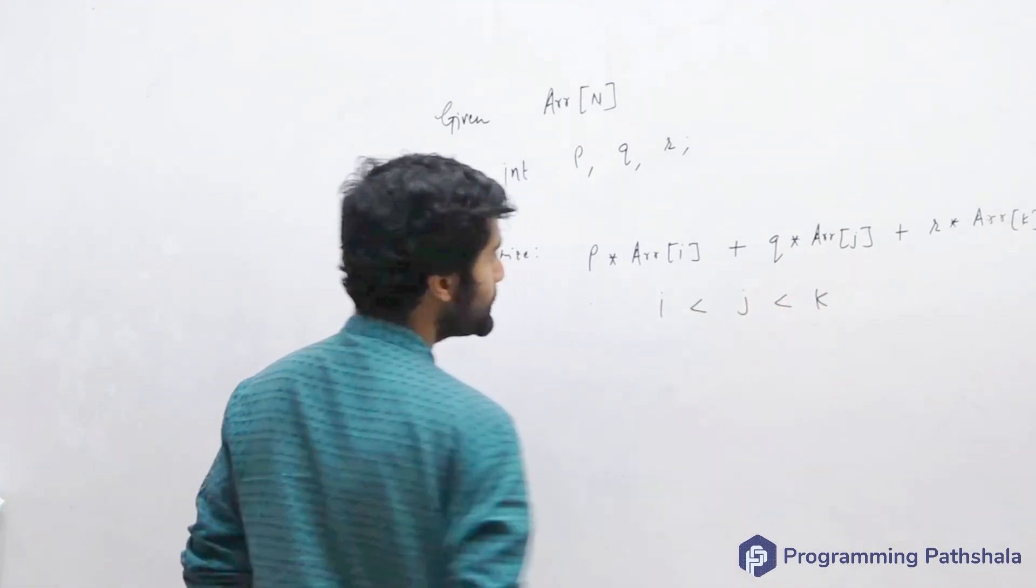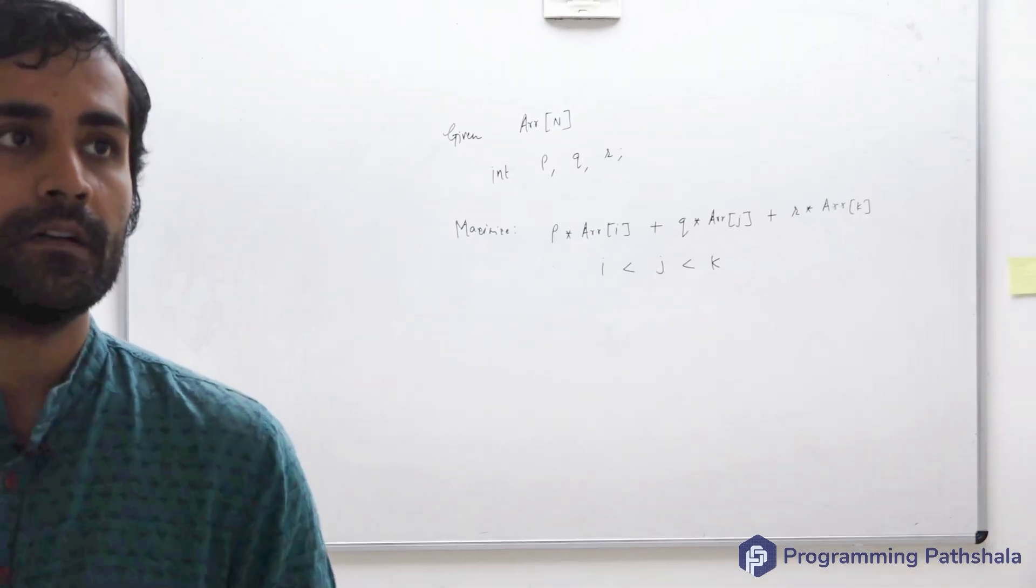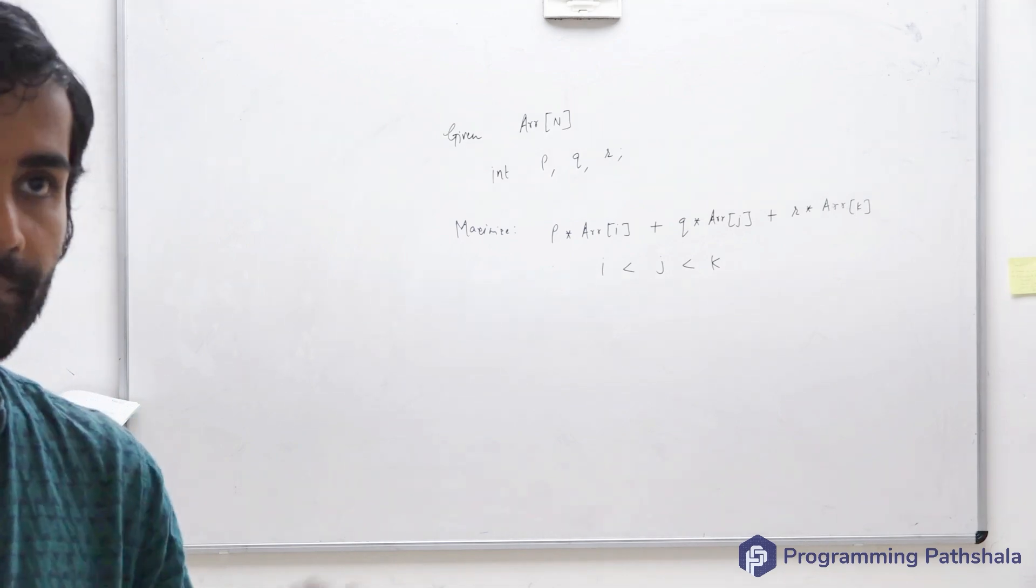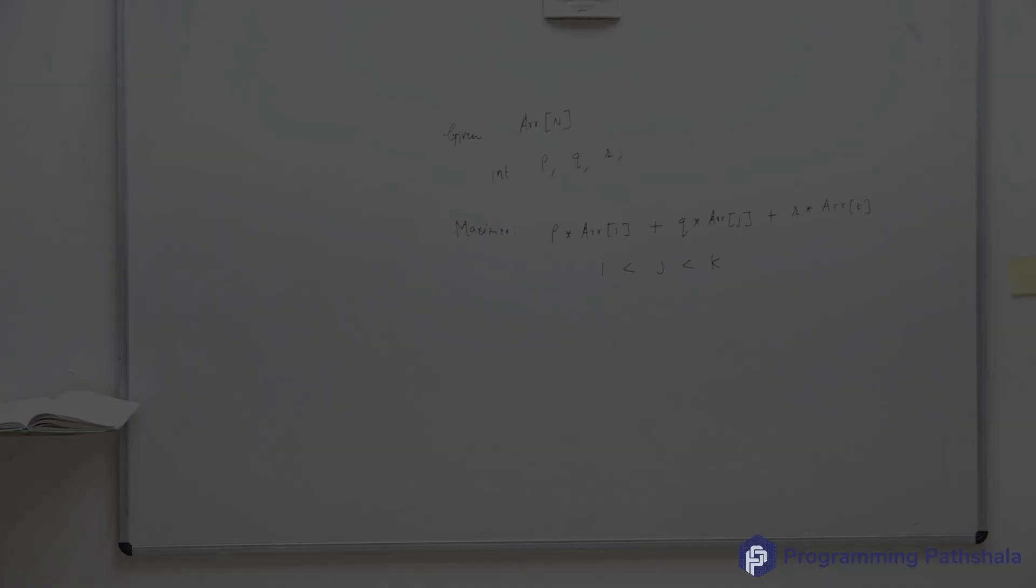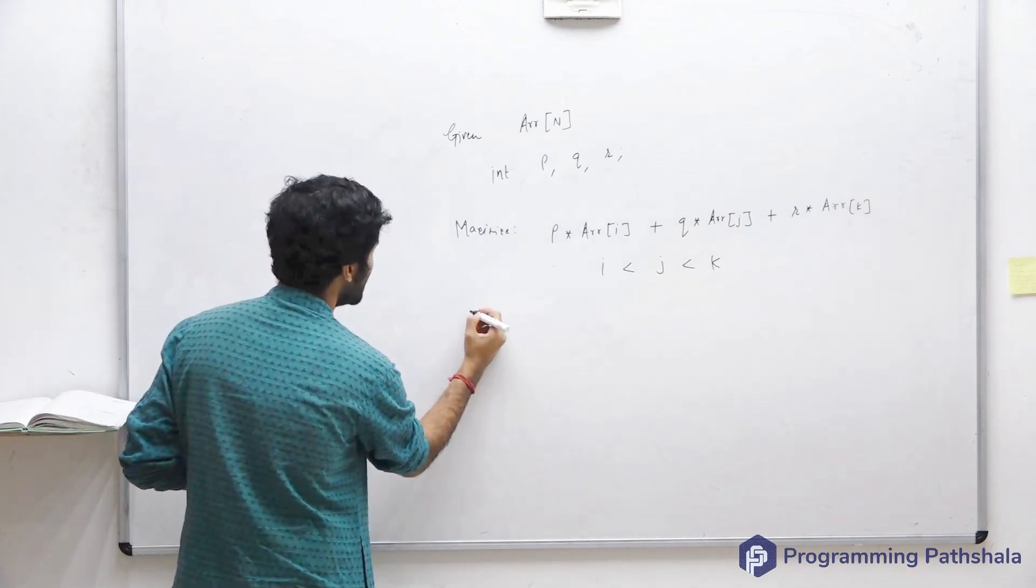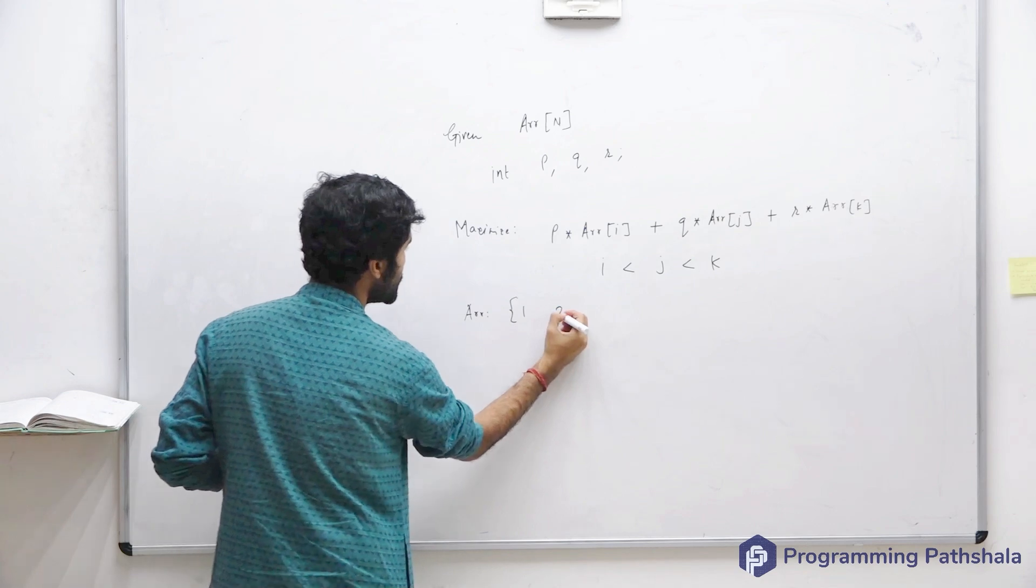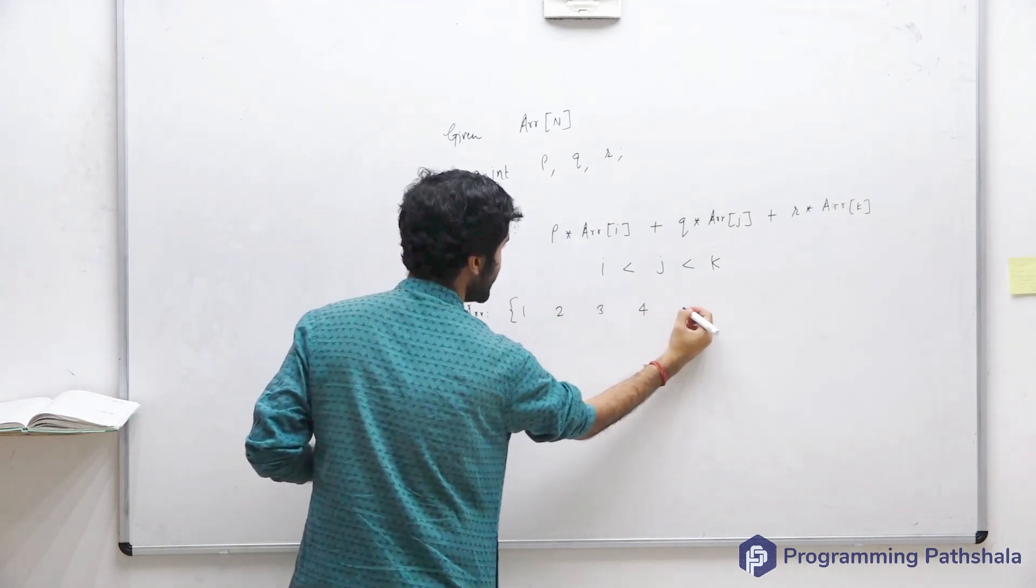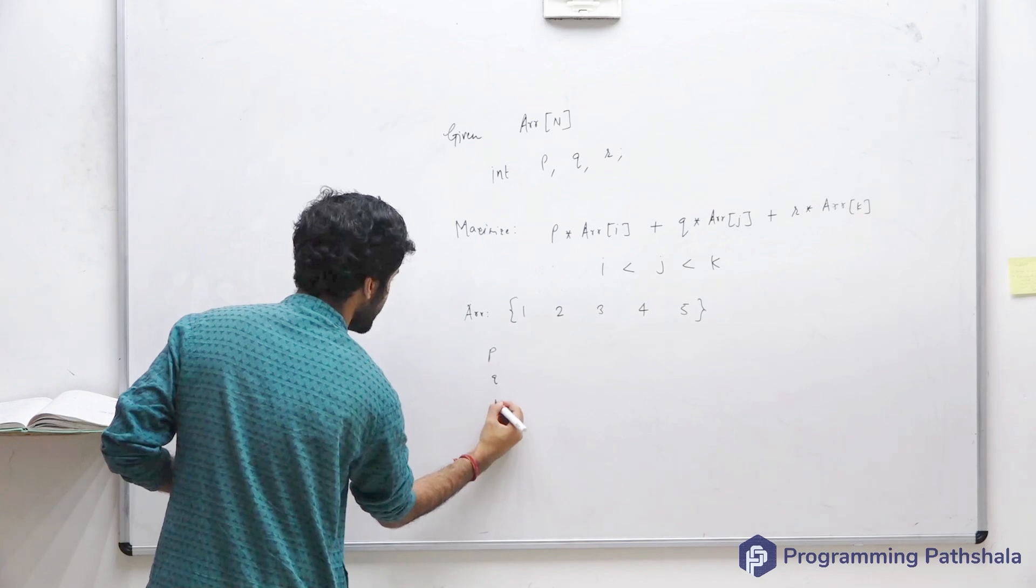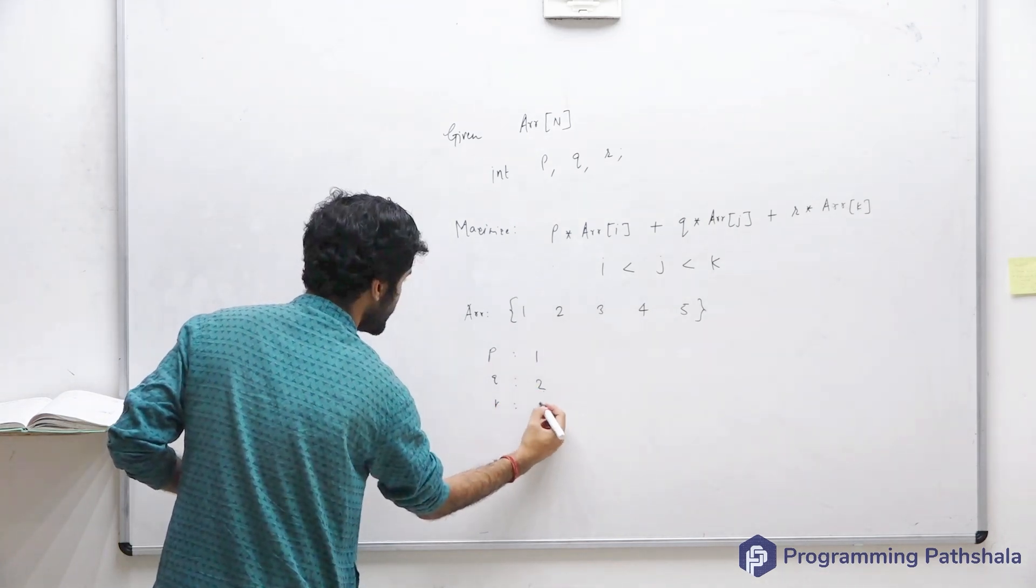So under these constraints, I have to maximize the value of this expression. Let's take a quick example. Let's say my array contains these elements: 1, 2, 3, 4, and 5. And let's say my p, q, r are 1, 2, and 3. What will be the answer for this case? 26, right?